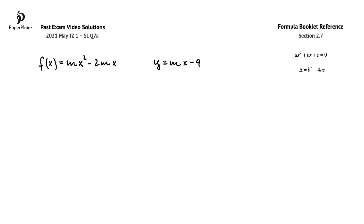In this question, we have function f(x) and a straight line. The line meets the graph of f at exactly one point. We have to show that m is equal to 4. There are three different methods that we can use to find a solution. Here, I will work with the concept of the discriminant.